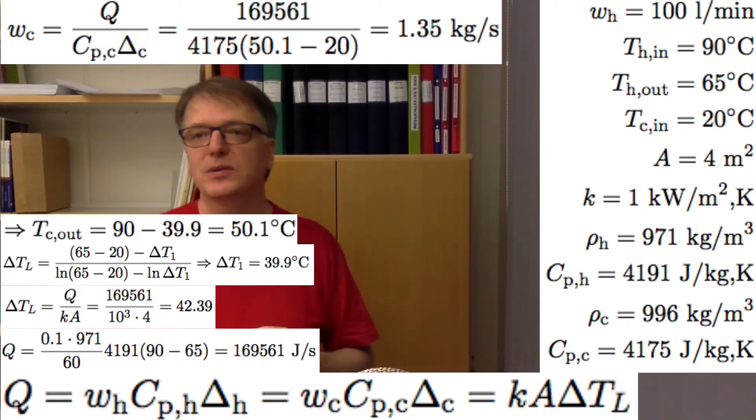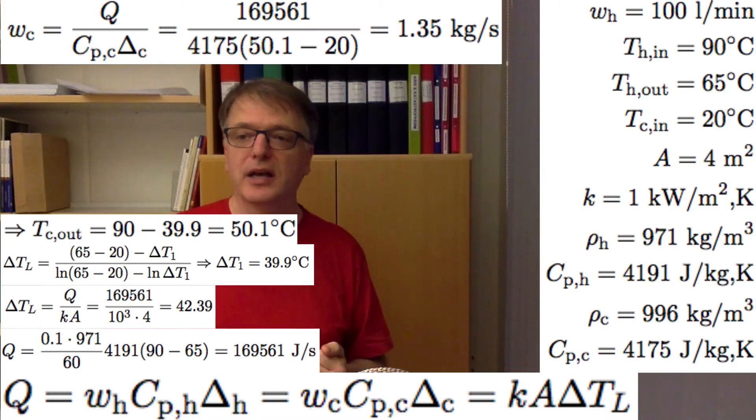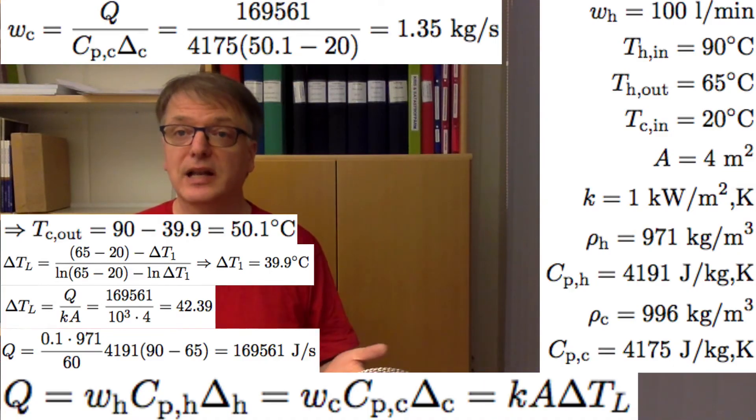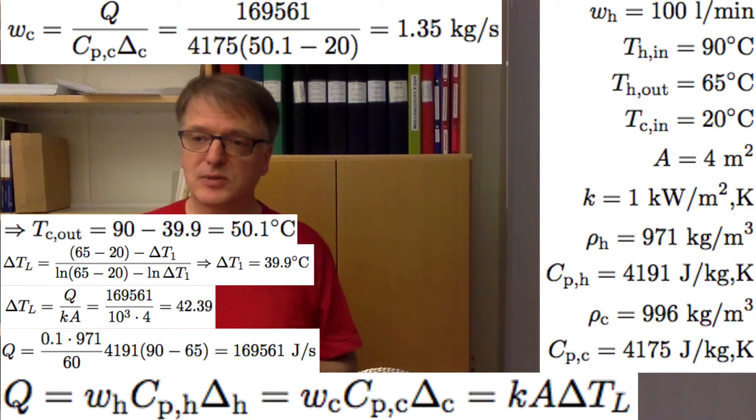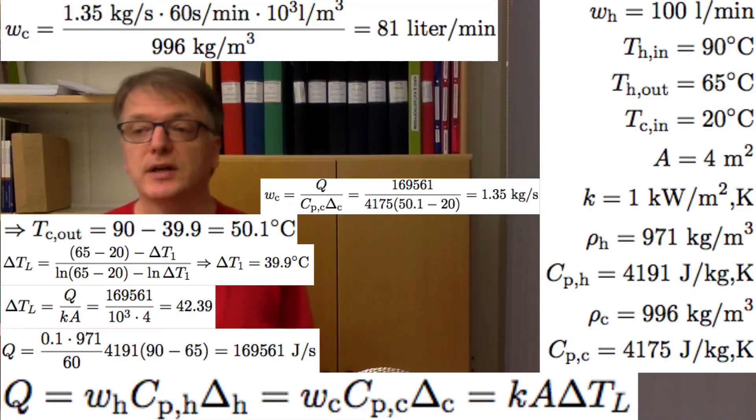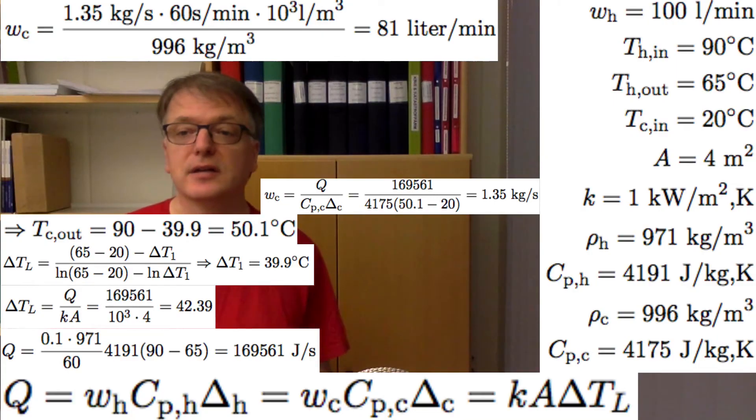So w₂, that must be Q divided by heat capacity and the temperature change, and we get that as 1.35 kg/s, which is less than 1.62, so it seems to be in good order. If we want to we can recalculate that as liters per minute: 1.35 kg/s times 60 seconds divided by the density, and you get 0.081 m³/min or 81 liters per minute.